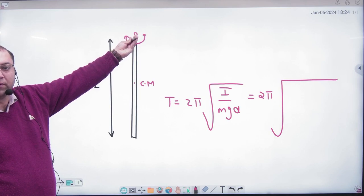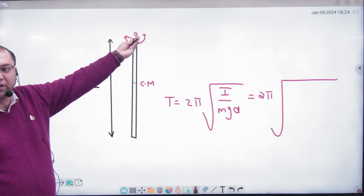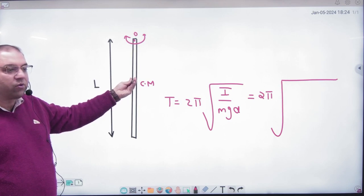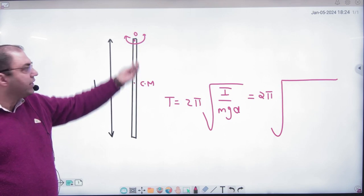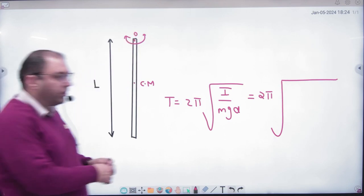I, what will happen? mL squared by 3. That is right. Because if the axis will be this, mL squared by 12. And if the axis will be tangent, then mL squared by 3.